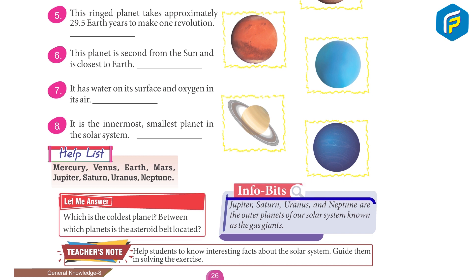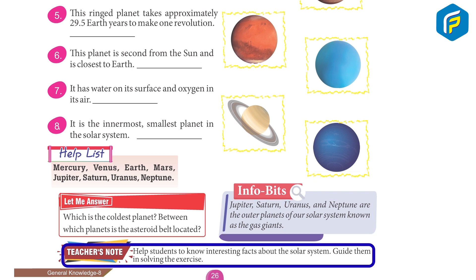Info bits. Jupiter, Saturn, Uranus and Neptune are the outermost planets of our Solar System, known as the Gas Giants. Teachers note: Help students to know interesting facts about the Solar System, guide them in solving the exercise.